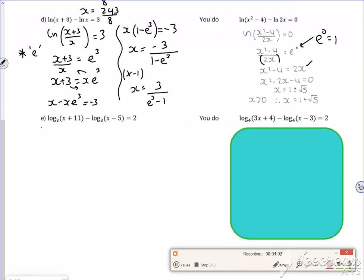So look at this one. Whoa, that'd be quick. So I've got log to base 3. I've got x plus 11 over x minus 5. That's equal to 2. If I do it by base 3, so I'm going to do 3 to the power of. x plus 11, x minus 5 is 3 squared.